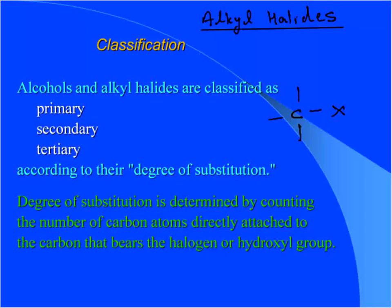First, look at the carbon bearing the halide or the OH group and see how many carbons it is connected to. Connected to only one carbon: primary. Two carbons: secondary. Three carbons: tertiary.